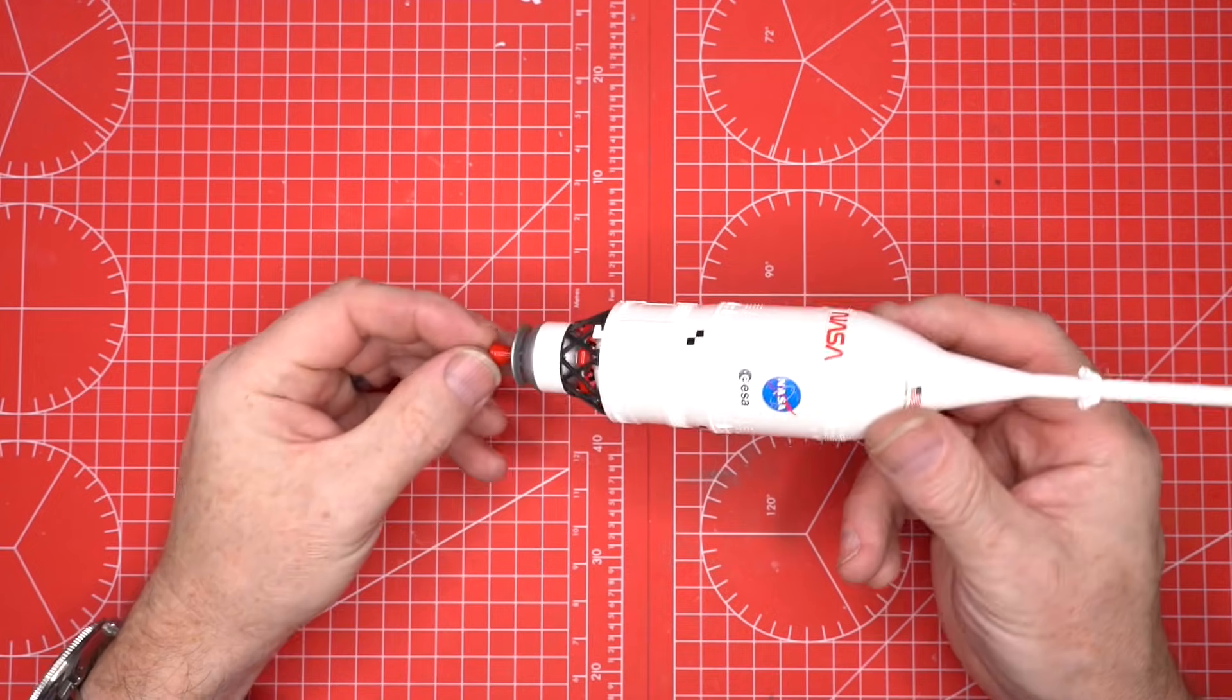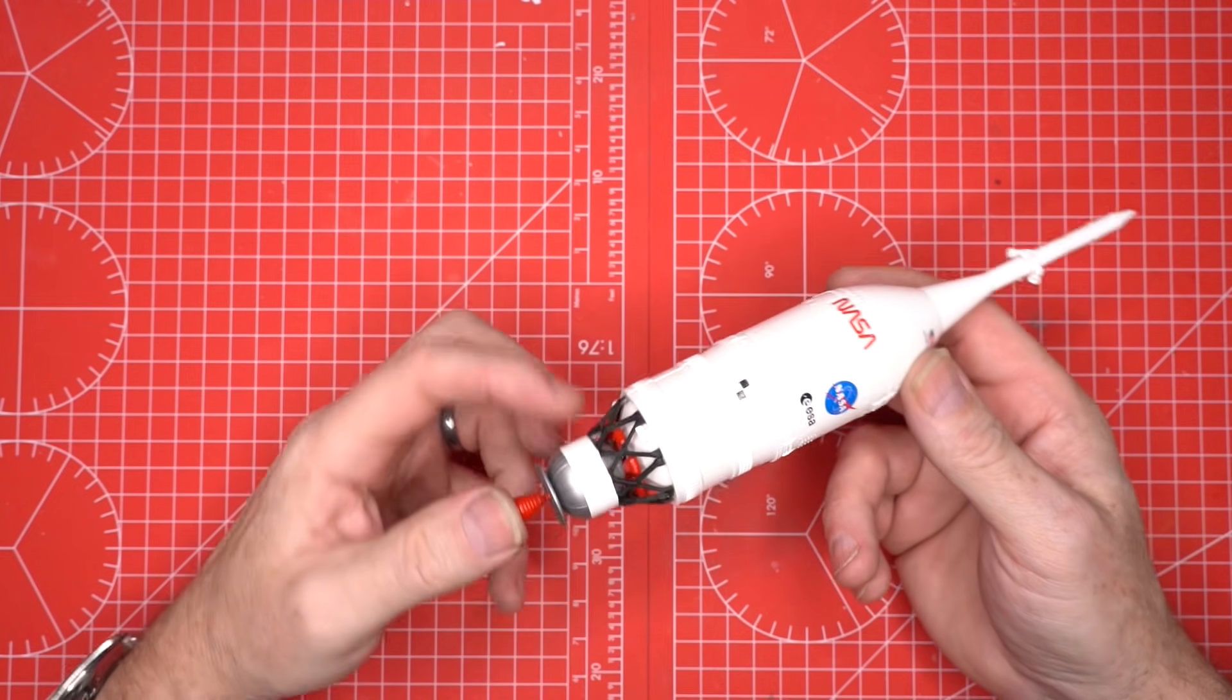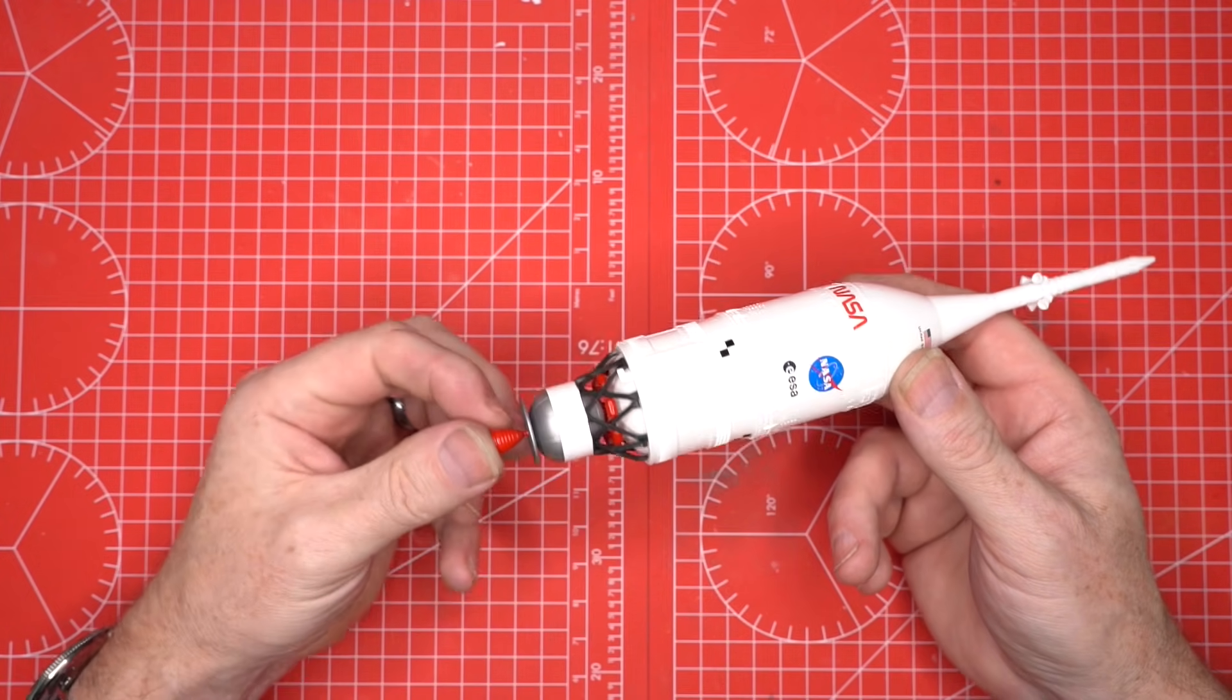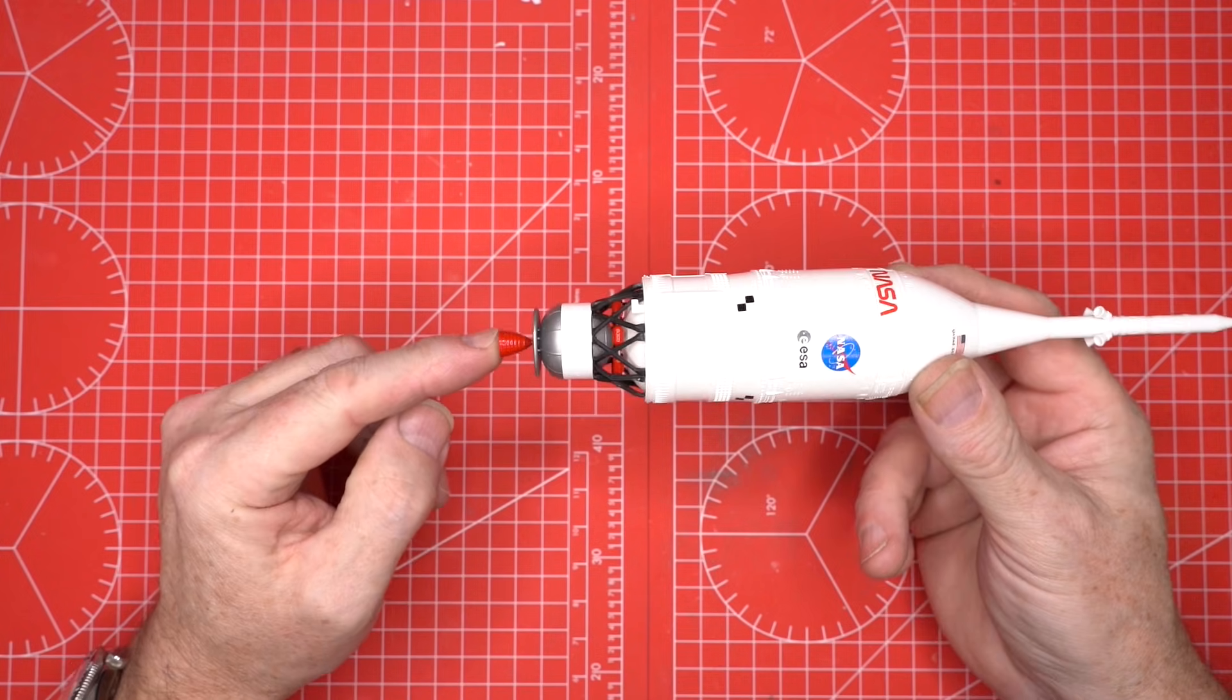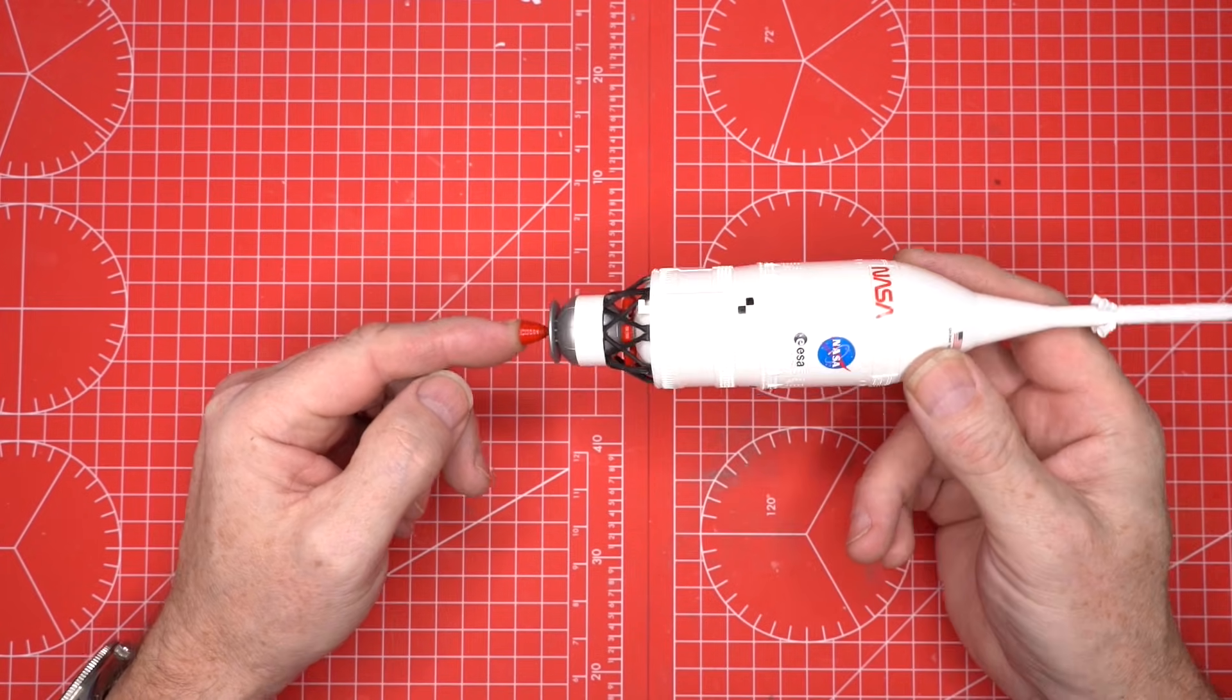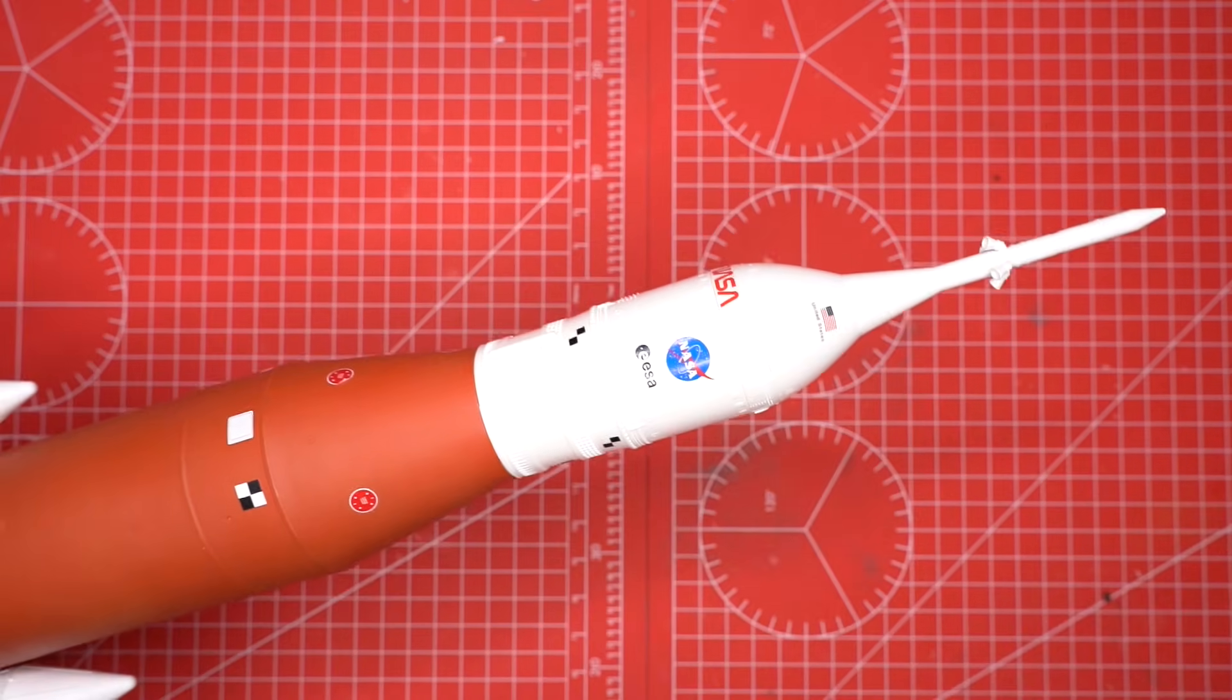Now that everything is built, we join the sections. We mount the two boosters onto the sides of the core stage, attaching each one to its brackets. We place the payload section on top, completing the SLS silhouette.